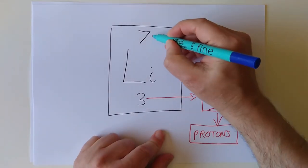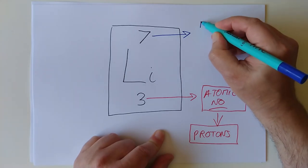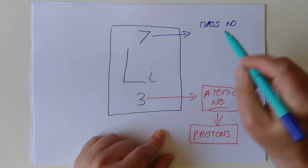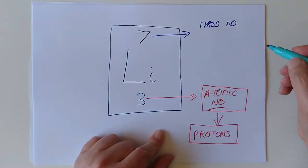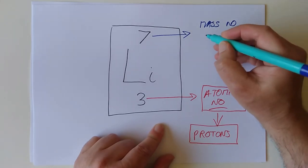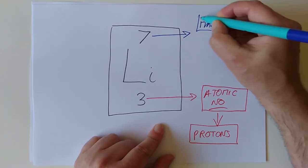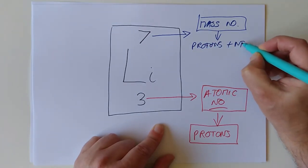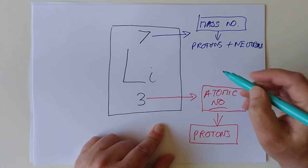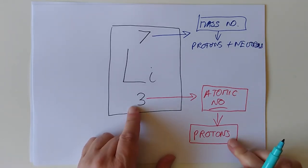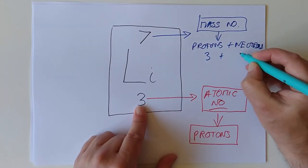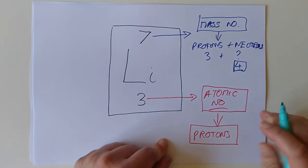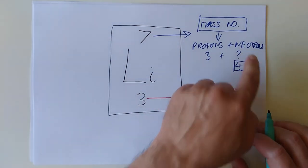This number at the top, the larger number, is called the mass number. It's linked to the weight of this particular element. How do they work out the mass number? It's the number of protons plus neutrons. So in this case, protons are three, and three plus neutrons equals seven, so that's got to be four. Another way of looking at it is you subtract three from seven, and it tells you how many neutrons you've got.